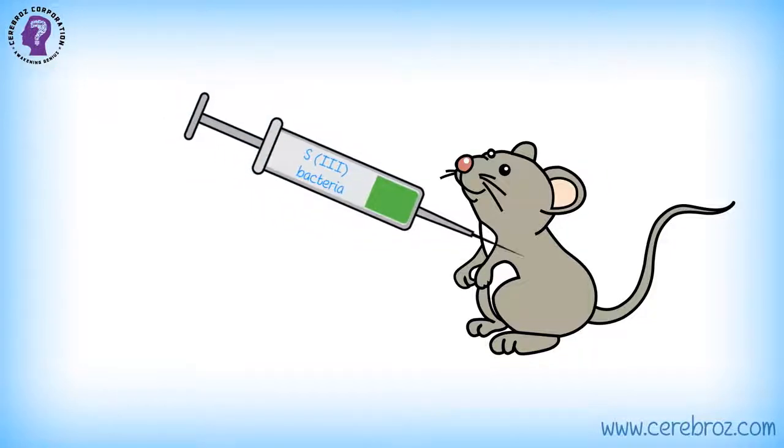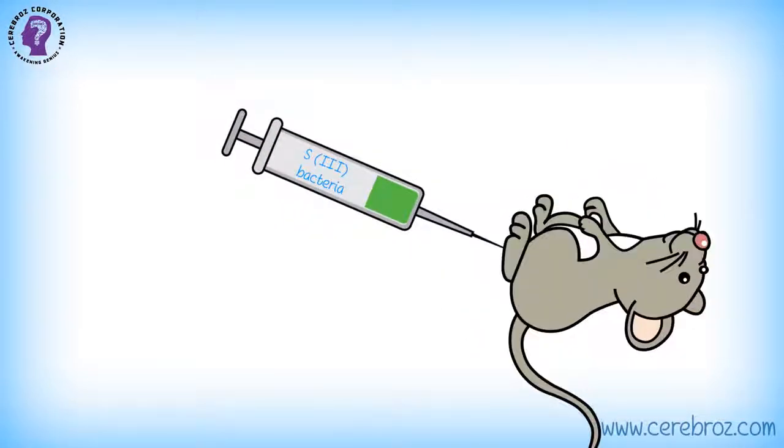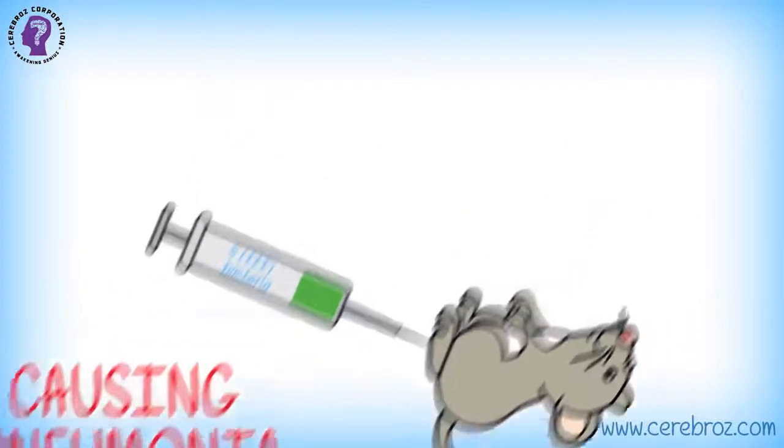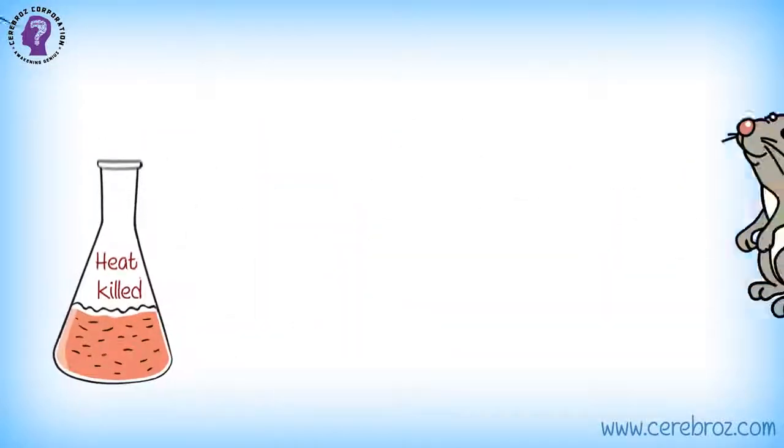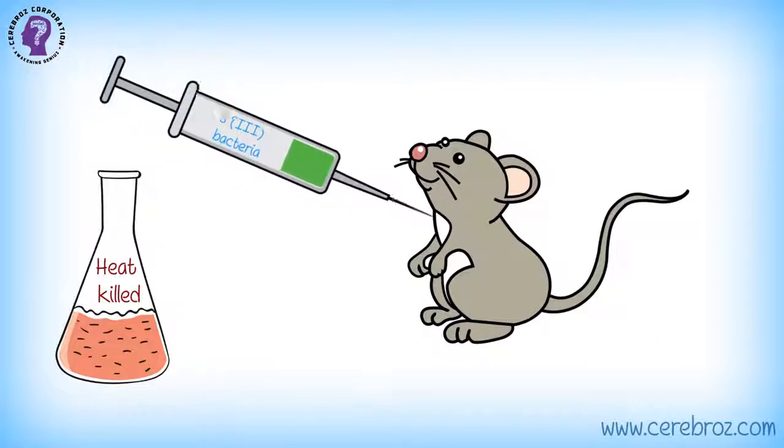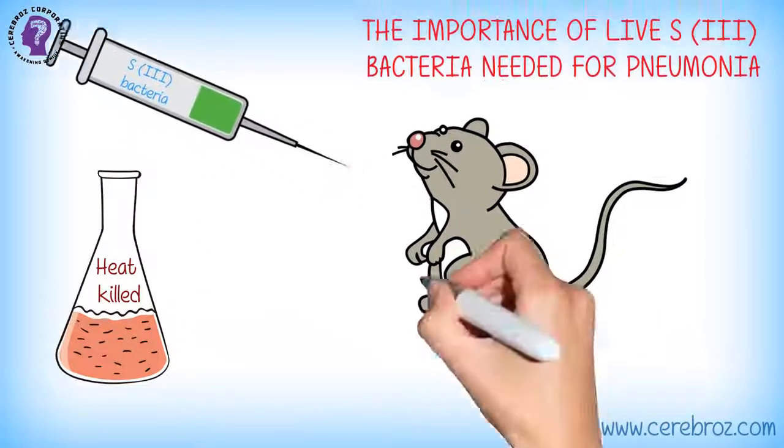When the virulent S3 bacteria was injected into mice, it killed them, causing pneumonia. But when the avirulent R2 was injected into mice, the mice lived. If you injected the heat-killed virulent S3 bacteria, the mice still lived, implying that live S3 bacteria are needed for causing pneumonia.